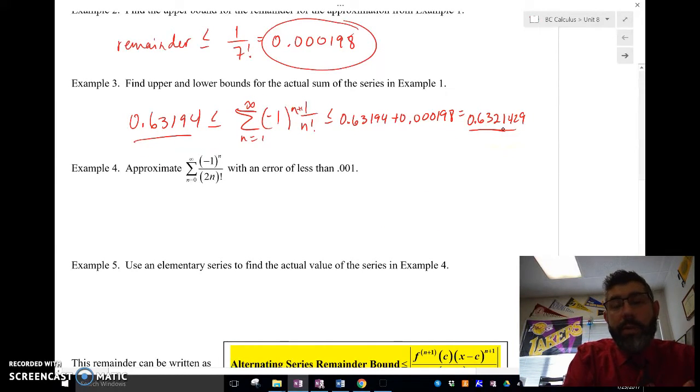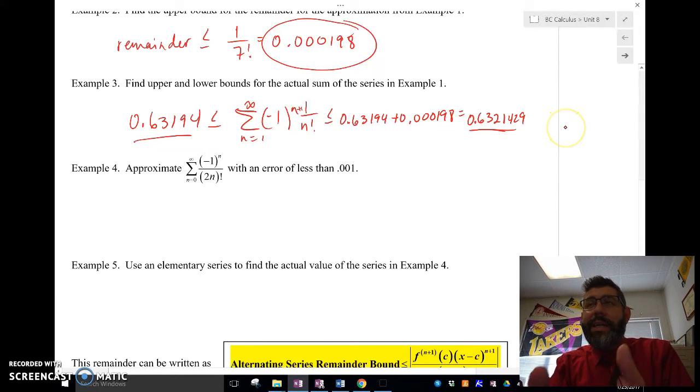It's going to be as low as this because that's what I estimated it to be for the first six terms and as high as this because that's the first six terms plus the error that I have using that sixth term.